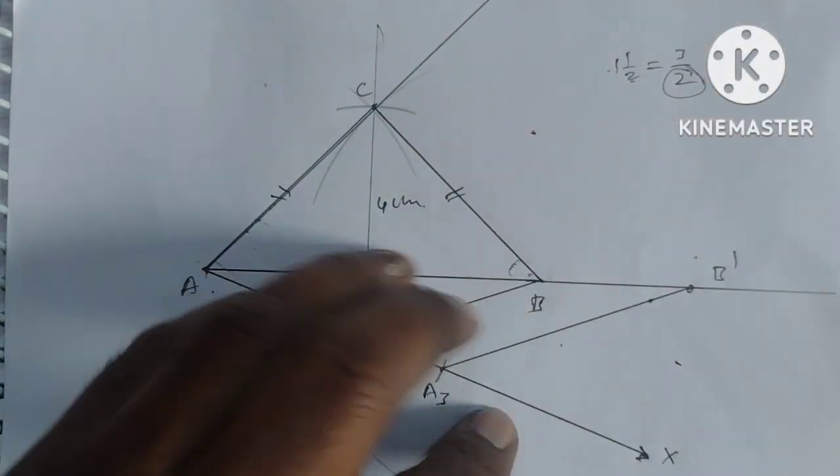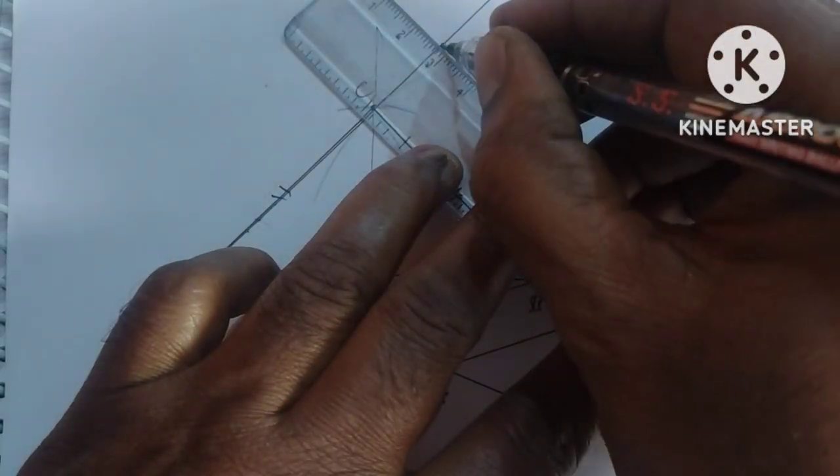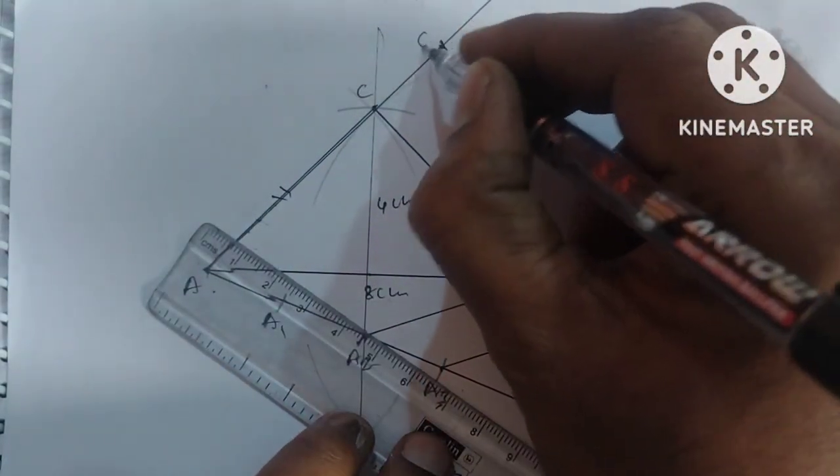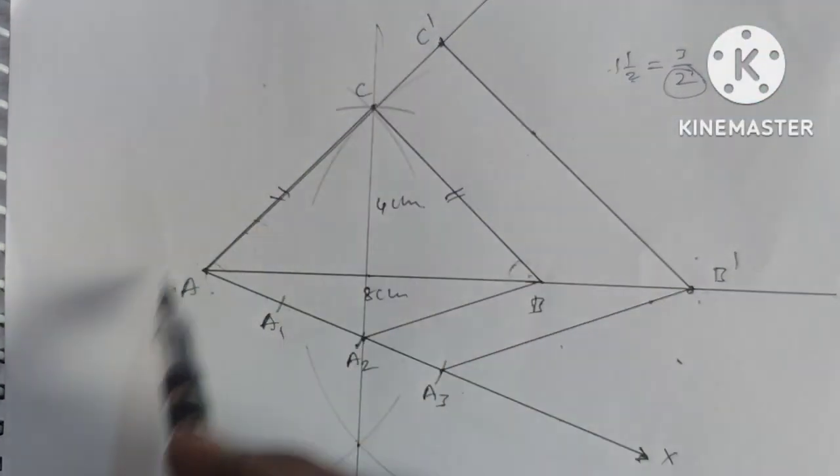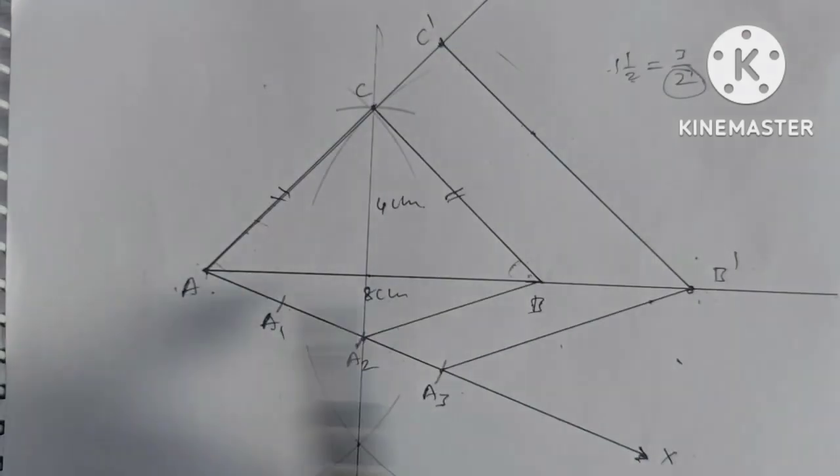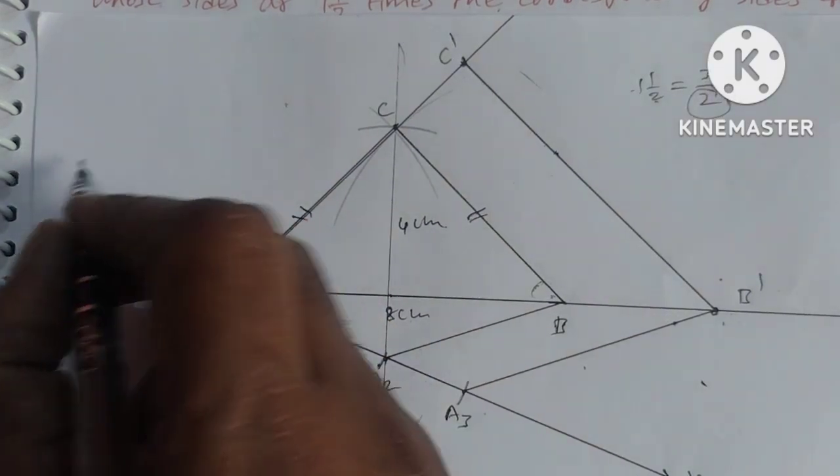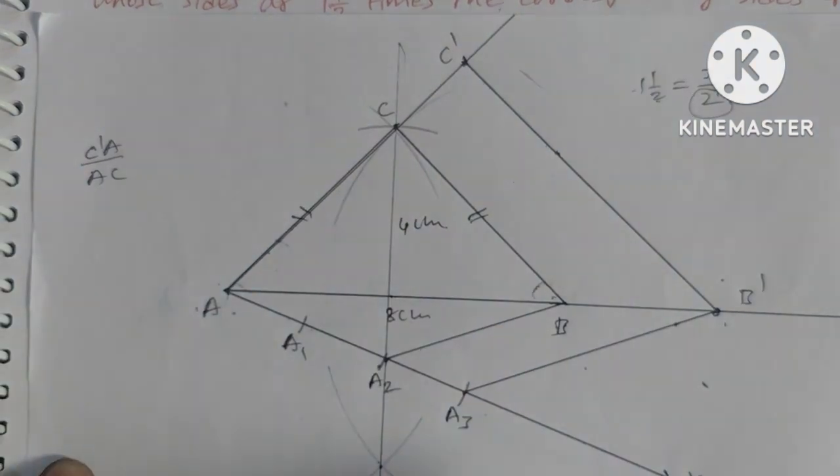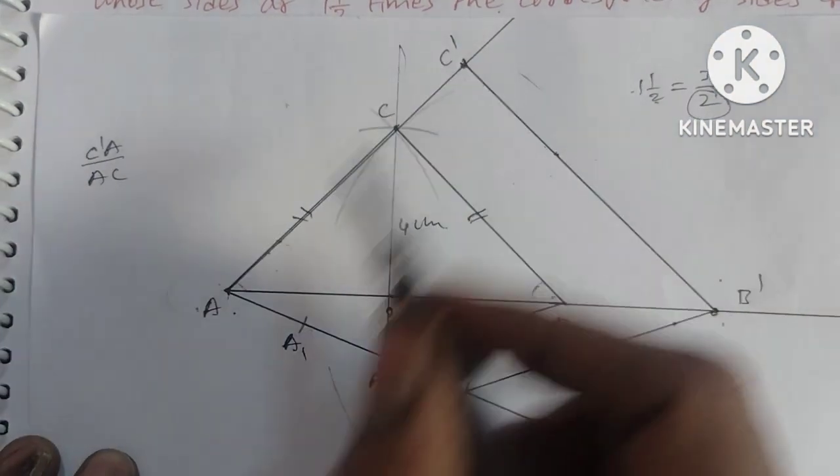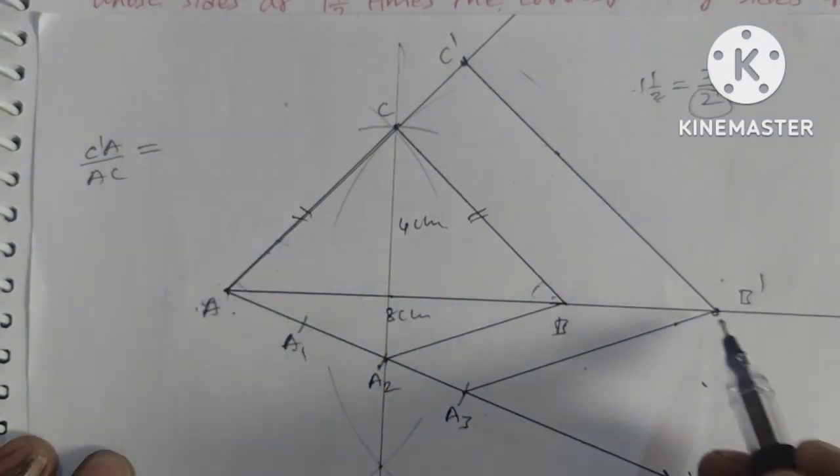From B dash, we draw an angle equal to angle B to get point C dash. Now we have constructed the similar triangle.